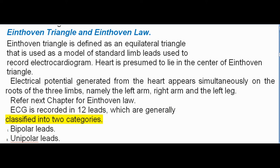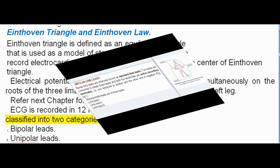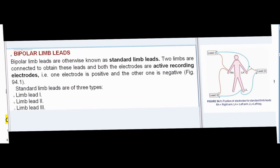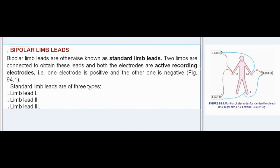ECG is recorded in 12 leads, which are generally classified into two categories: Bipolar Leads and Unipolar Leads.